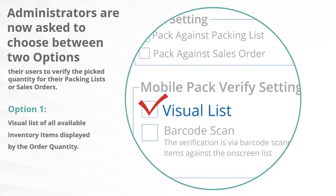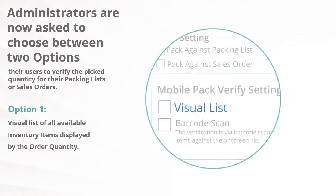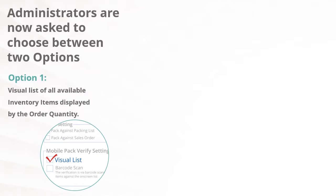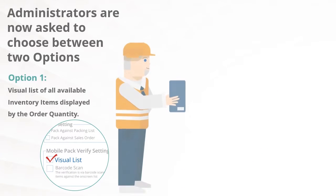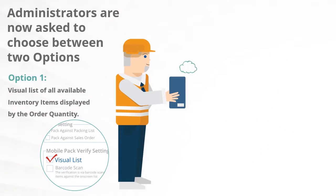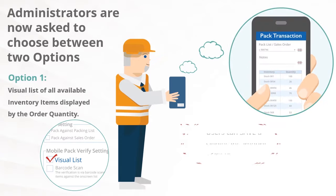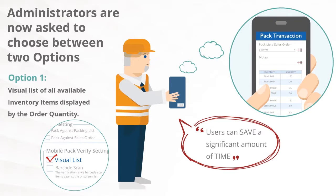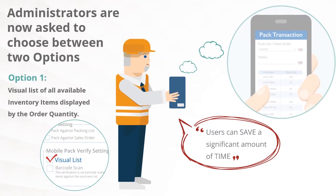The first option is a visual list of all inventory items displayed by the order quantity. This option is designed to save users a significant amount of time, because they can now see what items and quantities are supposed to be included in the order.